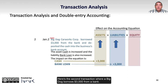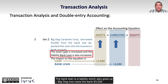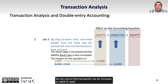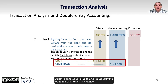In a second transaction, Big Dog borrows $3,000 from a bank. The accounts affected are cash, because the bank will deposit the loan proceeds into the company's bank account causing cash to go up, and the bank loan, which is a liability that also goes up — Big Dog now owes the bank $3,000. We record this as an increase or debit to cash, and an increase or credit to the bank loan. Debits equal credits, and the accounting equation remains in balance by increasing $3,000 on both sides.